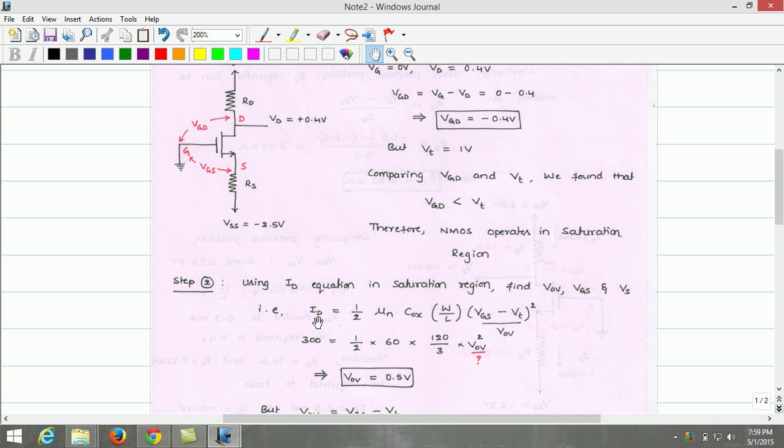The drain current flowing through the saturated MOSFET is given by Id equals 1/2 μnCOX W/L times (Vgs minus Vt) squared. Vgs minus Vt is also equivalent to overdrive voltage. Substituting the data given: Id as 300μA,